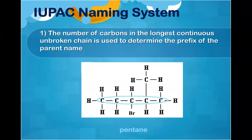First, every time when we go to do these, you're always going to need to find the number of carbons in the longest continuous unbroken chain. Here we have our five carbons. I also could have circled these five carbons — it would have been the same thing and we would get the same answer. I just find it a little bit easier to look straight across. So five carbons, all single bonds, is where pentane comes in.